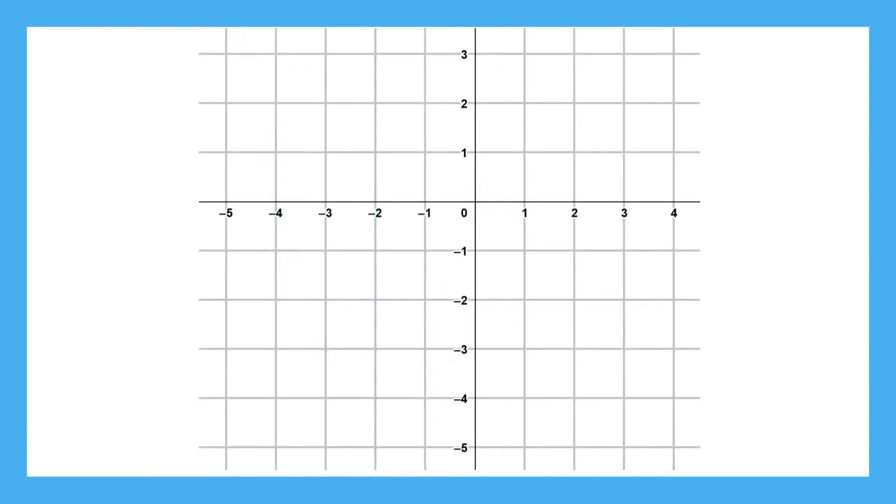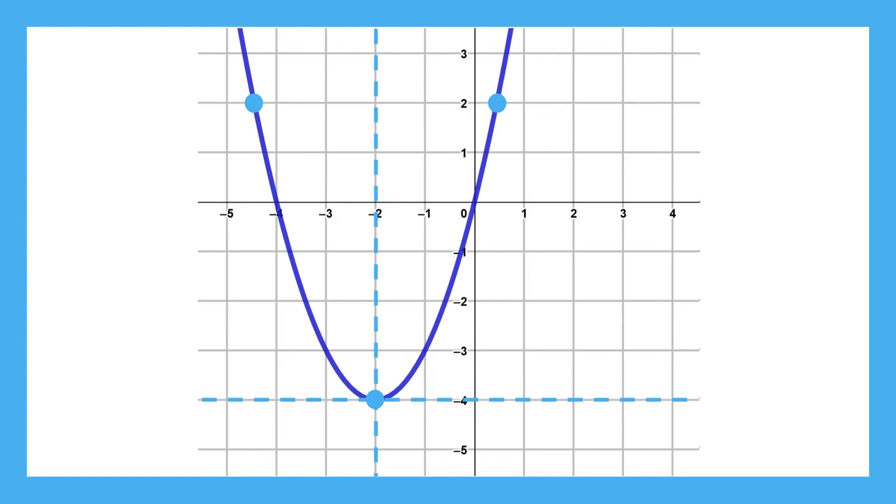We can also use symmetrical points to find the vertex's location. If we know that these two points have the same output, then the vertex has to be in the middle of them, somewhere on the line of symmetry. And if we also happen to know that there's a minimum at negative four, that tells us where the vertex is because the vertex is both on the line of symmetry and a minimum or maximum.